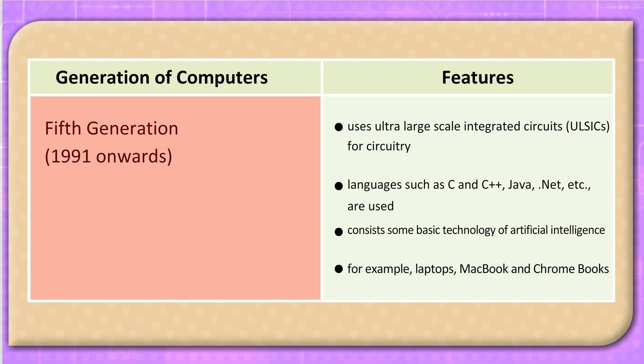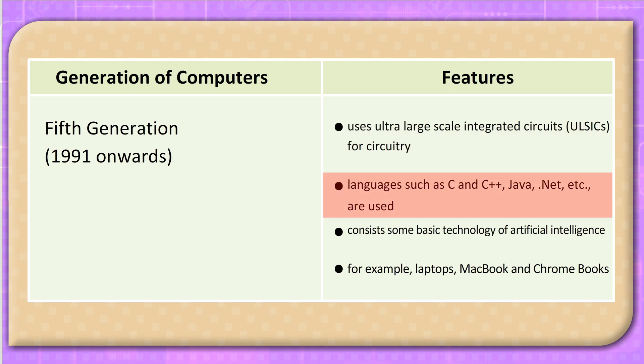Fifth Generation, 1991 onwards: Used Ultra Large Scale Integrated Circuits (ULSI) for circuitry. Languages such as C, C++, Java, .Net, etc. are used. These computers consist of some basic technology of artificial intelligence. Examples include laptops, MacBooks, and Chromebooks.